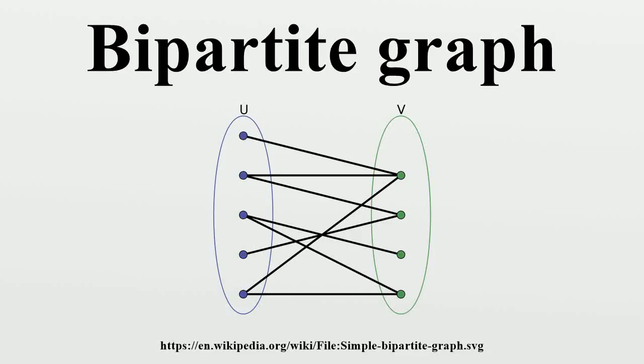In the mathematical field of graph theory, a bipartite graph is a graph whose vertices can be divided into two disjoint sets U and V such that every edge connects a vertex in U to one in V. These vertex sets U and V are often denoted as partite sets.